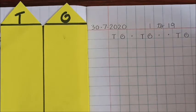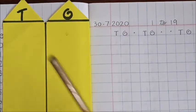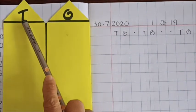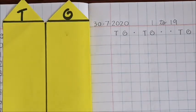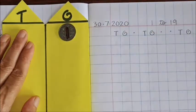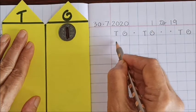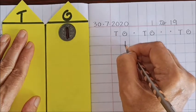Let's begin, children. T-O, T-O — tens house and ones house. The tens house is locked and we have one in the ones house. We will write one in the ones house.